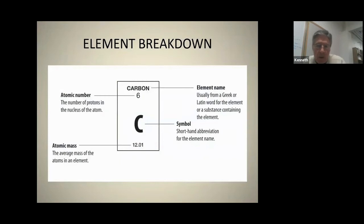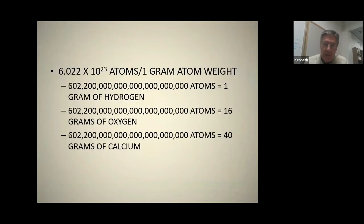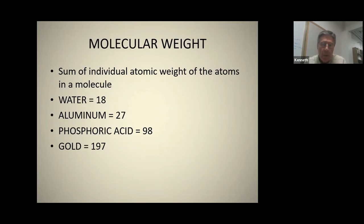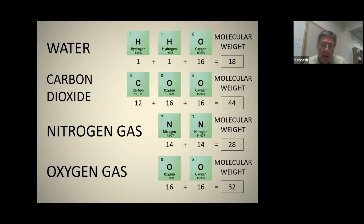Carbon is the sixth element with an atomic mass of 12. These elements are very, very small — it takes almost a trillion atoms of hydrogen to equal one gram. These are massive numbers, but they all have a weight and they're all present. When we look at individual atomic structures: water is 18, aluminum is 27, phosphoric acid is 98, gold is 197. It's a very simple process of mathematics.